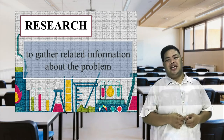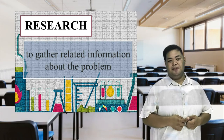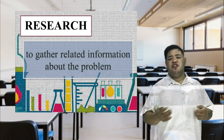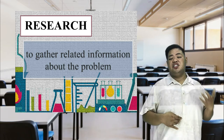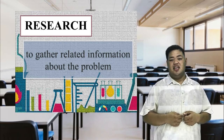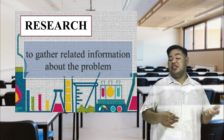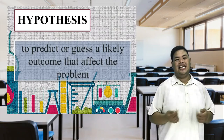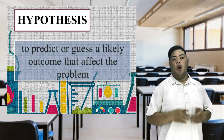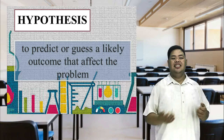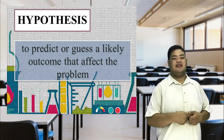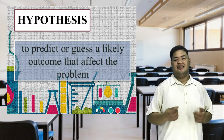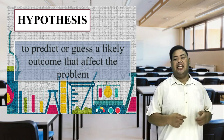Research — to gather related information about the problem. After making a question, you try to find what is already known about it. You may search across different sources like journals and papers written by scientists. You may also ask a resource person or use the internet. Hypothesis — to predict or guess a likely outcome that affects the problem. Once a question has been stated, a scientist must formulate a possible answer to the question, which is called a hypothesis. A hypothesis is an educated guess. It requires careful thinking and the application of skills.